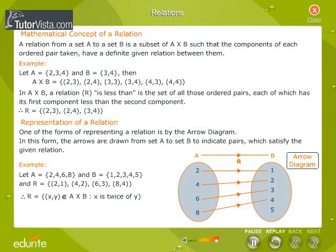Therefore, R is equal to {(x,y) belongs to A × B such that x is twice of y}.